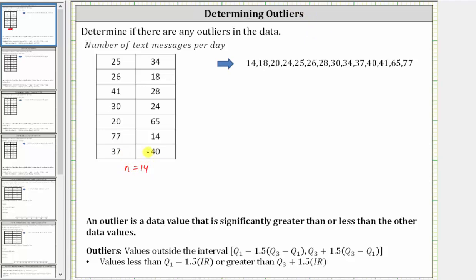Before we find quartile one and quartile three, we have to find the median. The median is the data value in the middle, but here because we have an even number of data values, there are two middle values, and therefore we'll have to find the mean of the two middle values. Notice if we drew a line segment here between the 28 and 30, we have seven values to the left and seven values to the right, and therefore we have two middle values of 28 and 30.